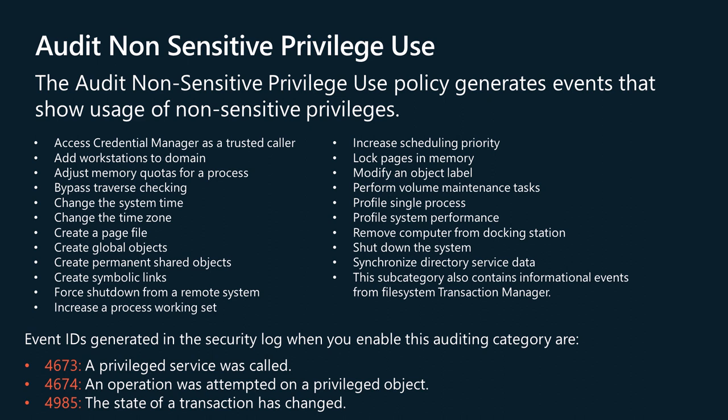This is the list of non-sensitive privileges that will trigger events: Access Credential Manager as a trusted caller, Add Workstations to Domain, Adjust Memory Quotas for a process, Bypass Traverse Checking, Change the System Time, Change the Time Zone, Create a Page File, Create Global Objects, Create Permanent Shared Objects, Create Symbolic Links, Force Shutdown from a Remote System, Increase a Process Working Set, Increase Scheduling Priority, Lock Pages in Memory, Modify an Object Label, Perform Volume Maintenance Tasks, Profile Single Process, Profile System Performance, Remove Computer from Docking Station, Shut Down the System, Synchronize Directory Service Data. This subcategory also contains informational events from the File System Transaction Manager.